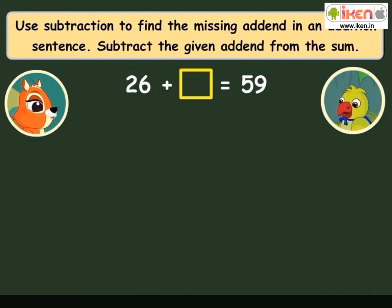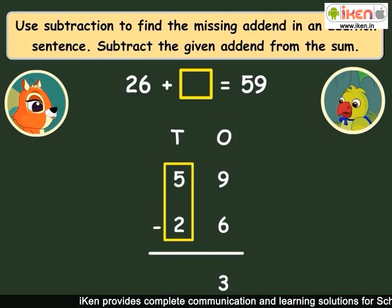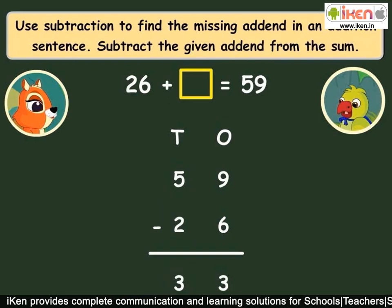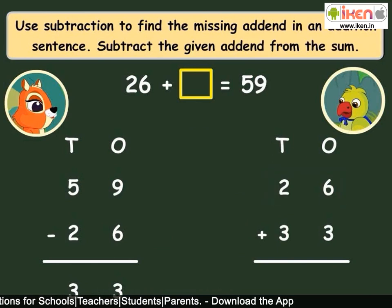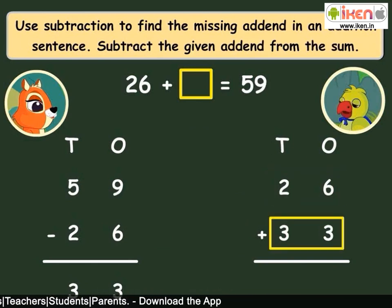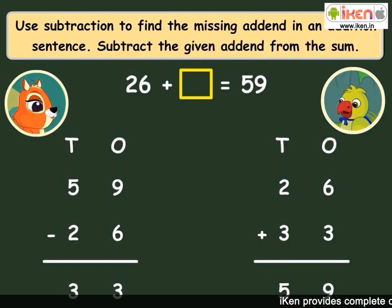So we will have to subtract 26 from 59. 9 minus 6 is 3, and 5 minus 2 is 3, thus 59 minus 26 is 33. To check if this answer is correct, let us add 26 and 33 and see if the sum is 59. Adding the ones gives 9, adding the tens gives 5 — the sum is 59. So our answer that the missing addend is 33 is correct.